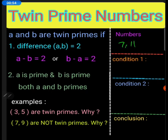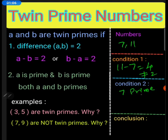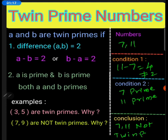Now consider 7 and 11. Eleven minus seven equals four, which is not equal to two. Seven is a prime number and eleven is also a prime number. So 7 and 11 are not twin primes because the first condition is not satisfied.